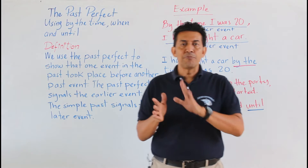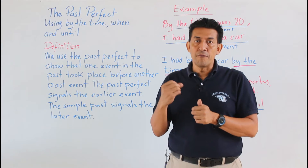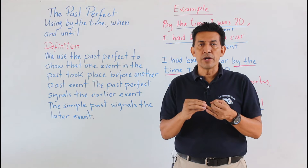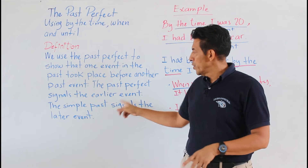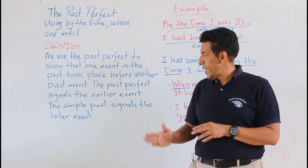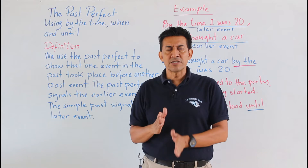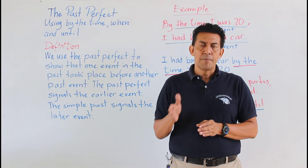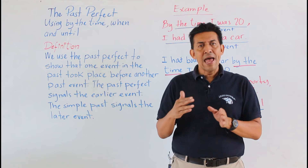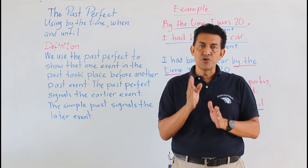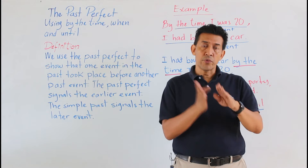Remember the past participle verb has two forms: regular and irregular. After that we use a complement. The simple past structure is subject plus verb in the simple past. You have to remember all the verbs in the past — we have regular and irregular verbs.